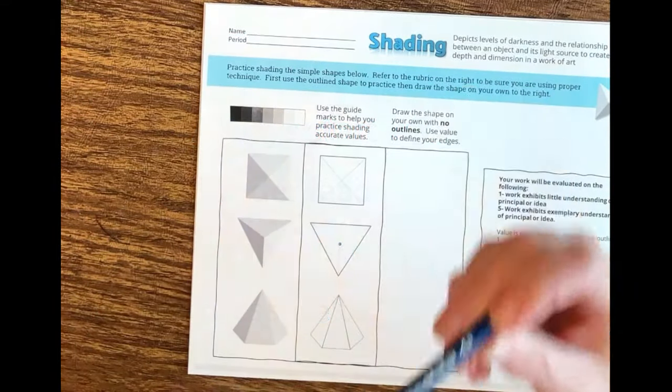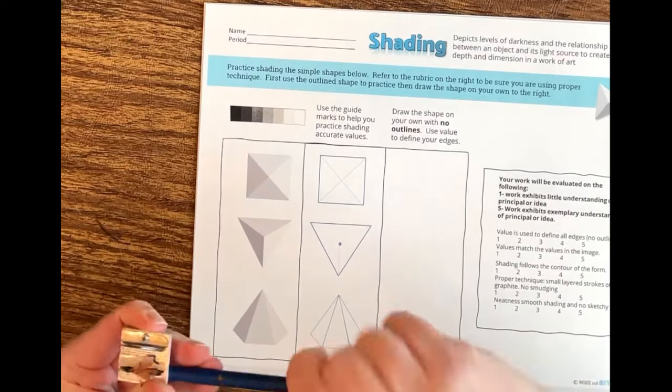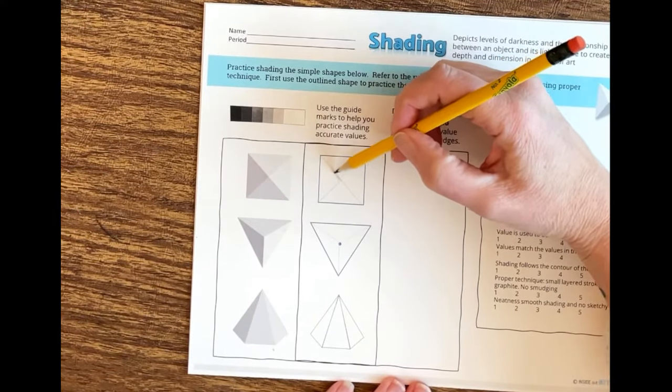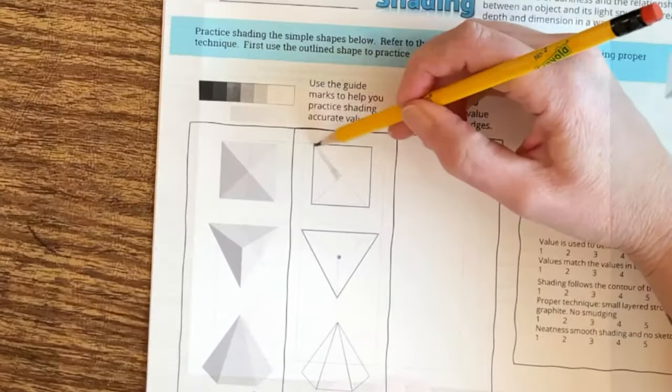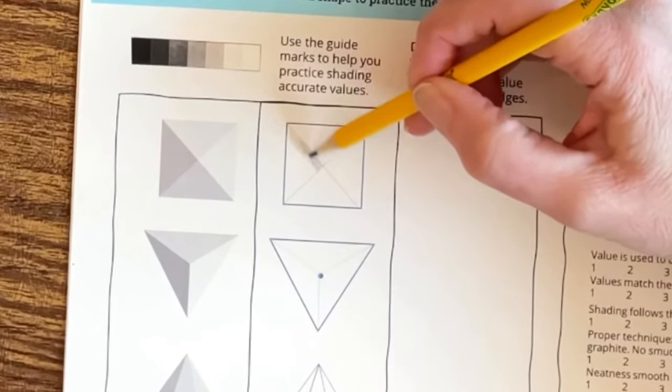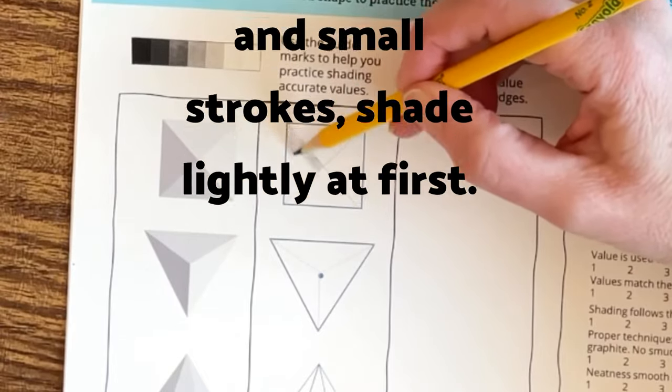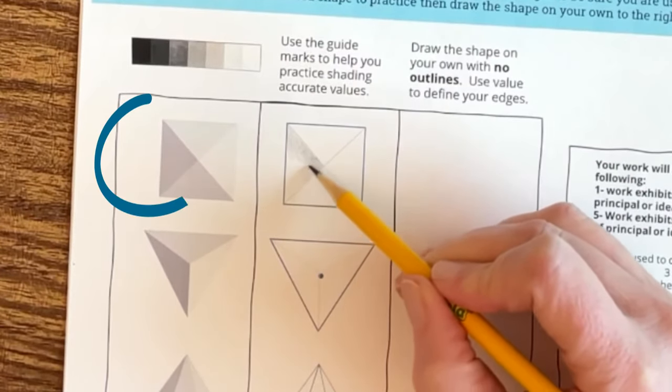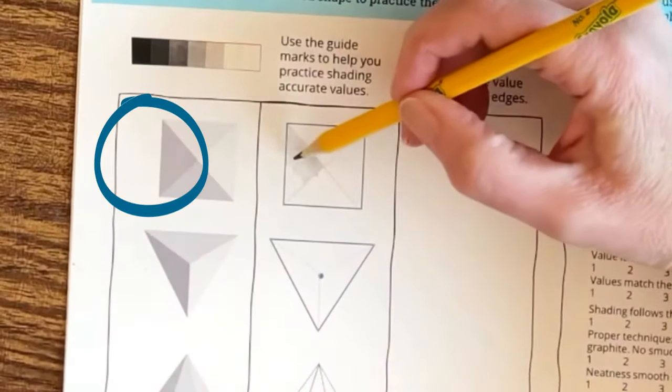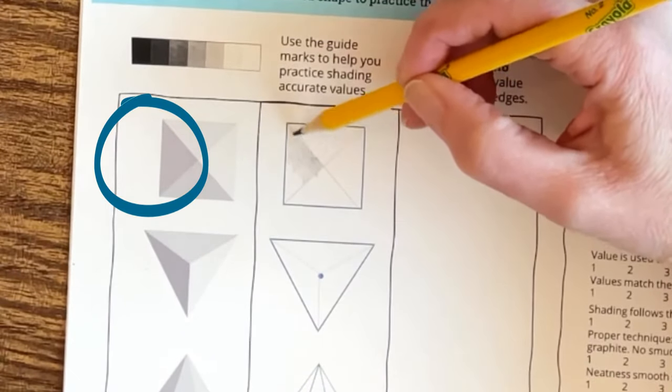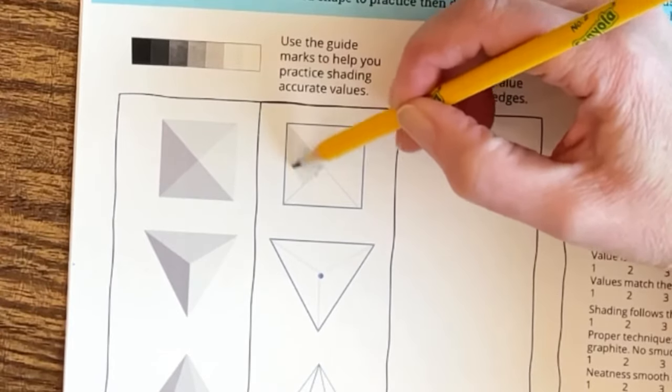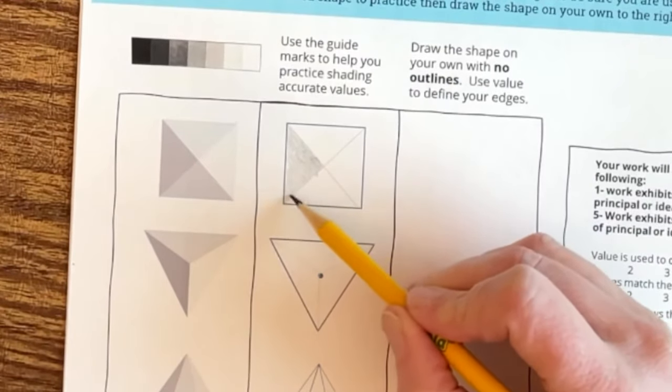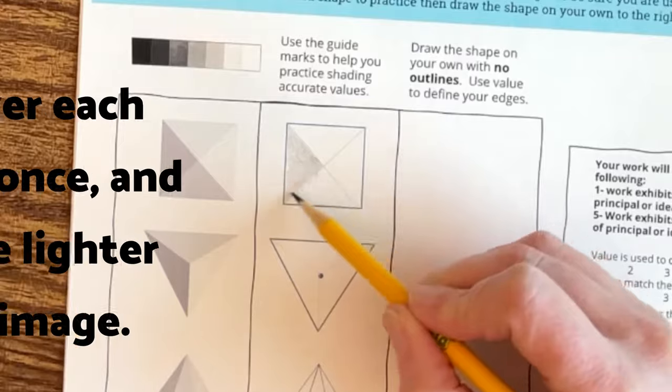I'm using a number two pencil. You can also use an HB pencil or any pencil that's lighter, and we're also going to be using a 4B pencil for this demonstration. The 4B pencil has softer lead and you'll get some darker values. I'm going to begin shading and I'm not going to go very dark at first. I'm going to try to shade lighter than what my actual value is because we can always go darker but it's very hard to go lighter once you've gone too far.